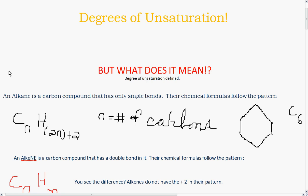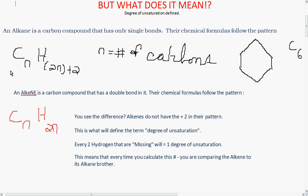Degrees of unsaturation. What does that mean? An alkane is a carbon compound that has only single bonds. Their chemical formula follows the pattern CnH2n plus 2, where n is the number of carbons.